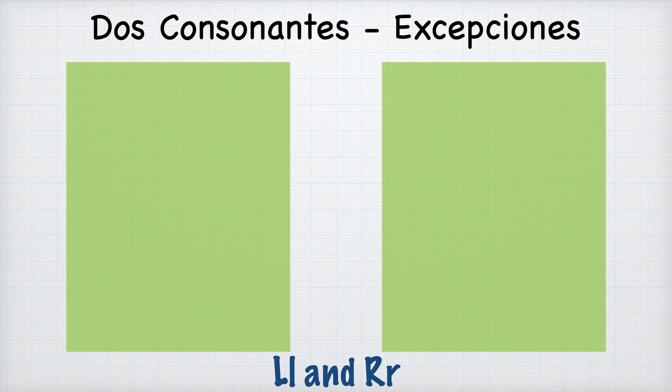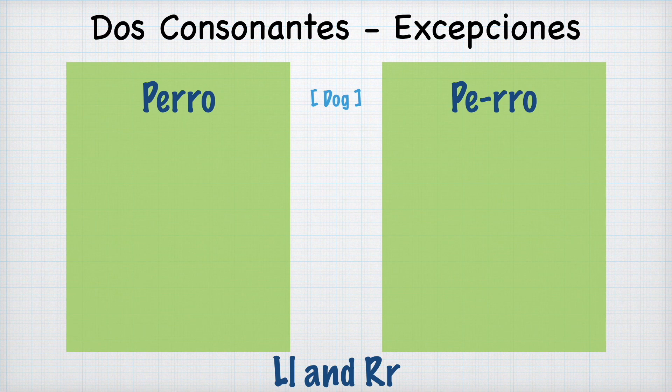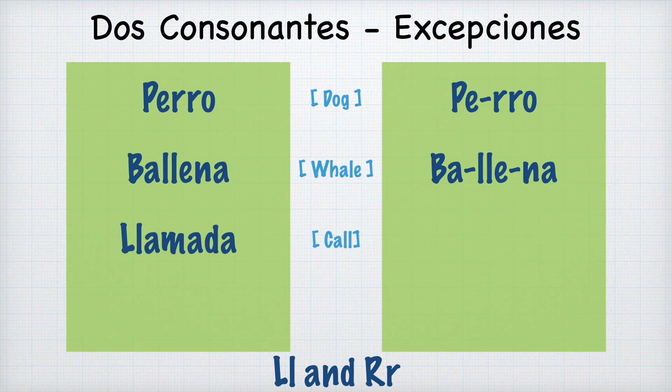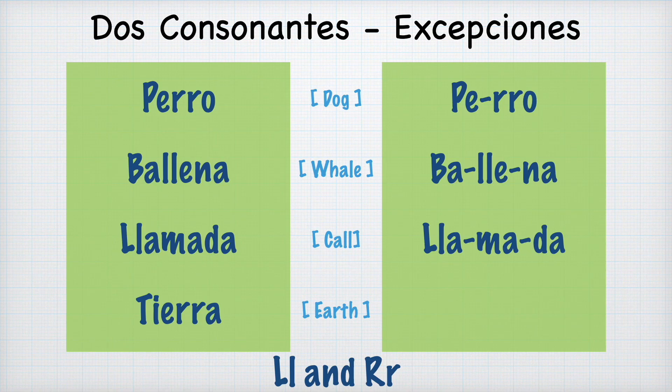The final exception on this topic is the letters elle (LL) and erre (RR). Whenever you have double L or double R, they are treated as a single letter and cannot be divided. For example: perro — the two R's stay together. Ballena — the two L's stay together. Llamada. Tierra — here the two R's stay together, and the weak vowel I and strong vowel E also stay together in the first syllable.